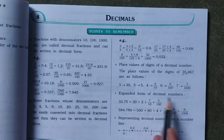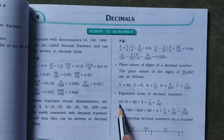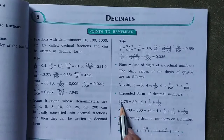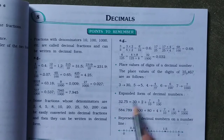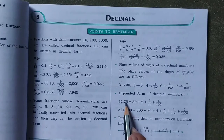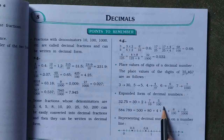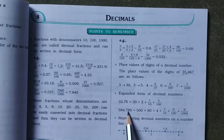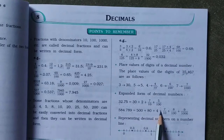Expanded or exponent form of decimal numbers. 32.75 means 30 plus 2 plus 7 by 10 plus 5 by 100. Five ninety-four point seven eight nine means 500 plus 90 plus 4 plus 7 by 10 plus 8 by 100 plus 9 by 1000.